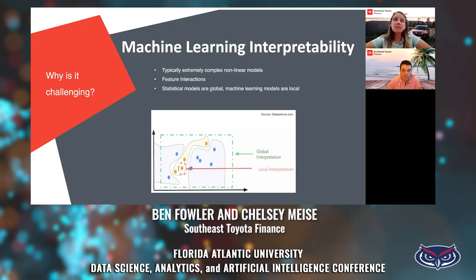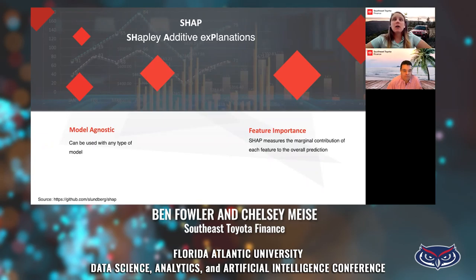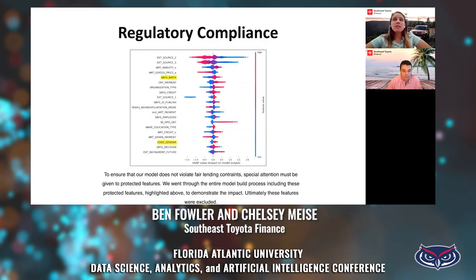I also couldn't mention machine learning interpretability without mentioning Patrick Hall — go check out his GitHub repo to see great examples. One technique we use at SETF for machine learning interpretability is SHAP, which stands for SHapley Additive Explanations, created by Scott Lundberg. Using SHAP, you can explain the output from any machine learning model. SHAP plots originate from coalitional game theory and calculate the marginal contribution of each feature to an overall prediction.